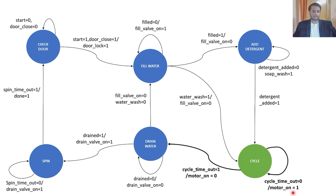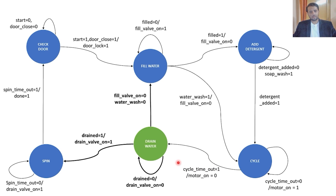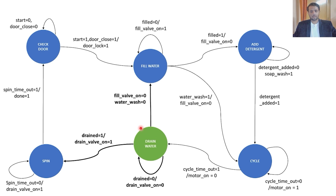Once the detergent is added, we go to the cycle state for washing the clothes. We have a cycle timeout, and until it is completed we keep the motor on. Once the cycle timeout is completed, the motor is turned off and we go to the drain state, where the dirty water is drained out. From drain, if the water wash is not done, we go back to fill water. This time we don't add detergent and go directly to cycle to wash with clean water, then drain again.